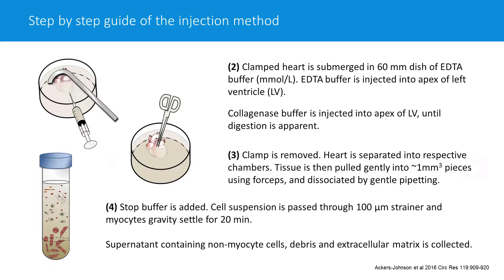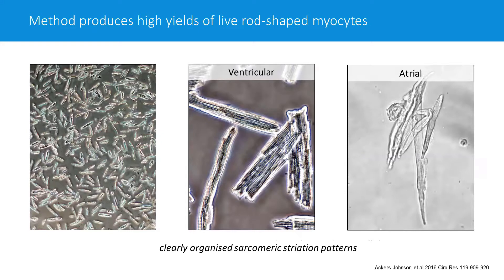After settling, we introduce cells to calcium in a stepwise fashion. The supernatant will contain non-myocyte cells, debris, and extracellular matrix, whereas the pellet will contain your cardiac myocytes. We normally use this technique to isolate ventricular cells, and it works really well—we see cardiac myocytes with clearly organized sarcomeric striation patterns. We have also recently started using the technique for atrial cells, though this is still in development.